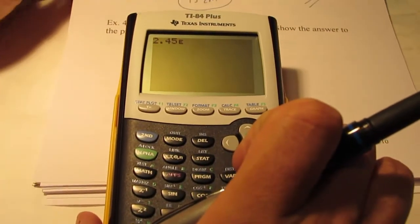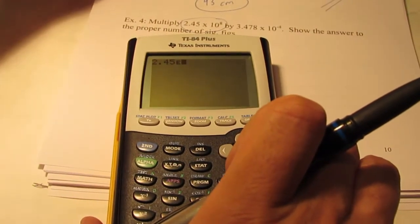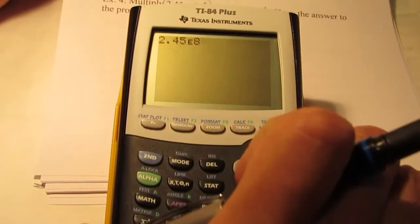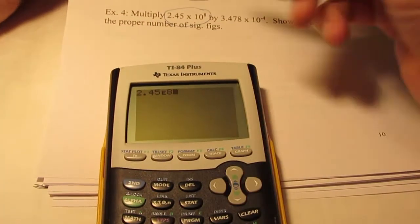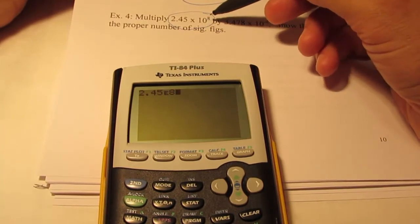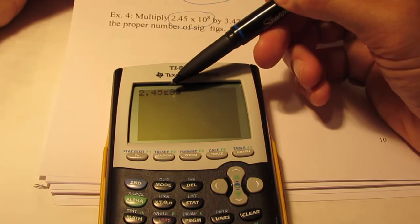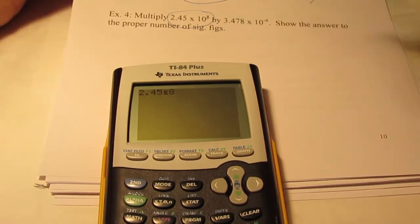And then we go 2nd EE. Now, when you press 2nd EE, the letter E shows up in your calculator, and that means times 10 to some power. We want to go to the eighth power. So that 2.45E8 means 2.45 times 10 to the eighth. I know you don't see the 10 in the screen, but that E signifies that it is there.